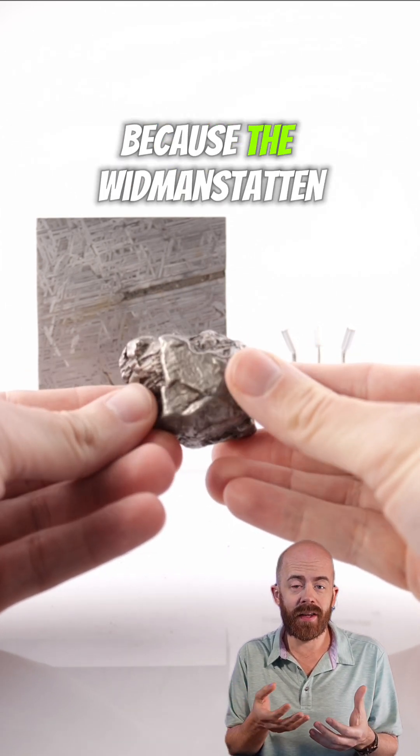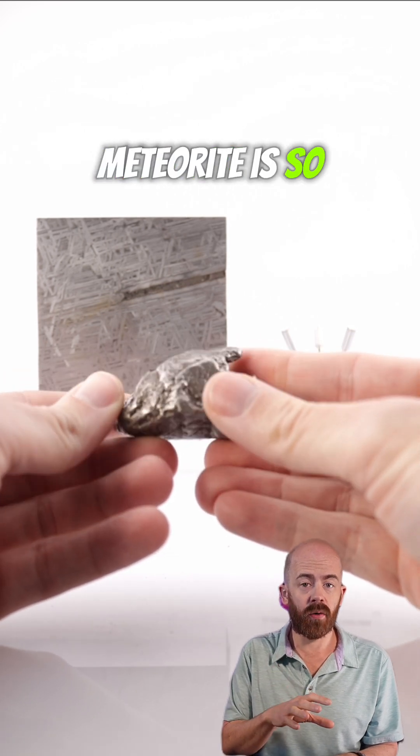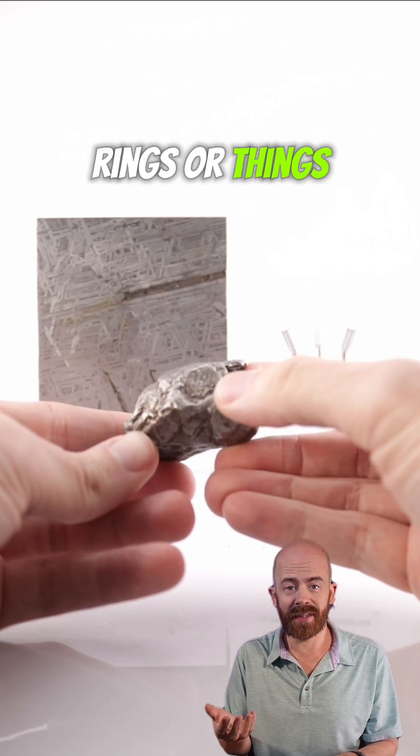It turns out because the Widmanstätten pattern on this Alatai meteorite is so gorgeous that these get made into jewelry a lot, little pendants or rings or things like that.